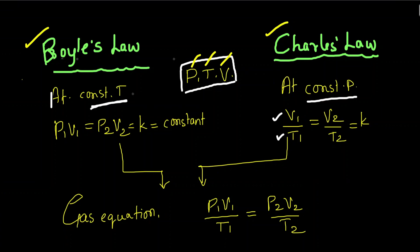Robert Boyle kept temperature constant and studied what happens to the volume when pressure is changed. He arrived at this equation: P1V1 = P2V2 = P3V3, and so on, which is constant.